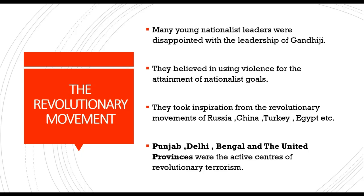In the previous video we had studied that Gandhiji had called off the non-cooperation movement because of the incident which occurred at Chauri Chaura in Uttar Pradesh, in which 22 policemen were killed. The non-cooperation movement was not successful; Mahatma Gandhi's desire of attaining Swaraj within one year was not fulfilled, and the Khilafat issue was also left unsolved. But the mass participation rekindled the nationalist spirit.